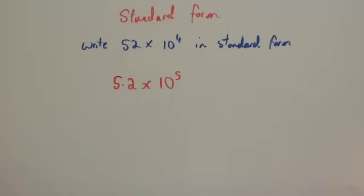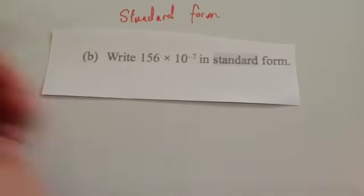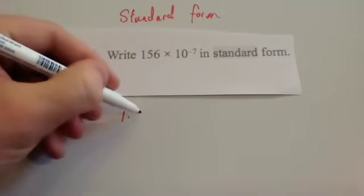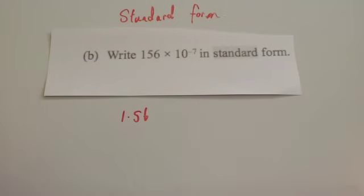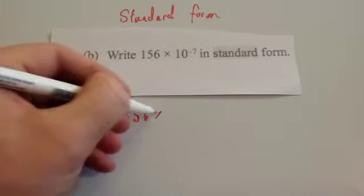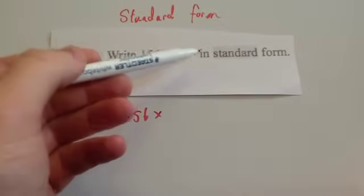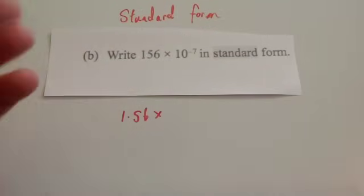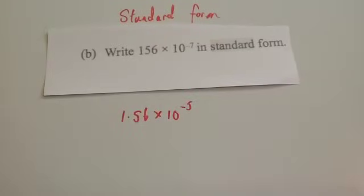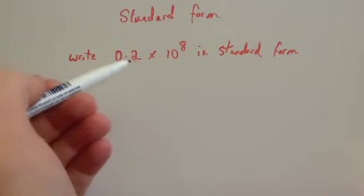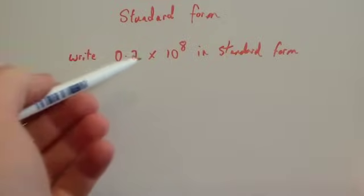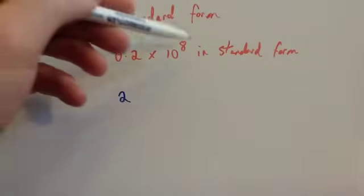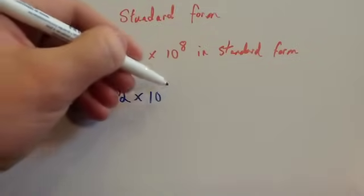Let's have a look at another question like that. We've been asked to write 156 times 10 to the minus 7 in standard form. Again, 156 isn't between 1 and 10, so the number we're going to use would be 1.56. We've made it 100 times smaller, so we need to make the other number 100 times bigger — we increase the power by 2. So we go from minus 7 to minus 5. Remember, increasing a negative means going back up towards 0. So it would be 1.56 times 10 to the minus 5. Next: write 0.2 times 10 to the 8 in standard form. This 0.2 isn't between 1 and 10, so we need to make it 10 times bigger — we call it 2. Then we make the power 10 times smaller, so that's times 10 to the power of 7, and that would be in standard form.